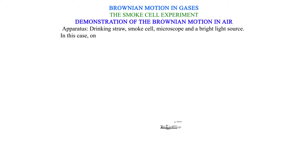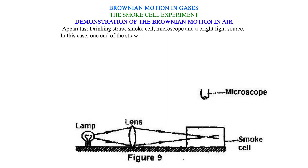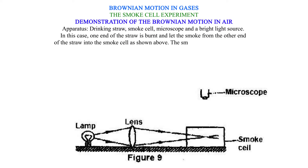In this case, one end of the straw is burnt and the smoke from the other end of the straw is let into the smoke cell as shown. The smoke is then covered using a transparent glass lid.